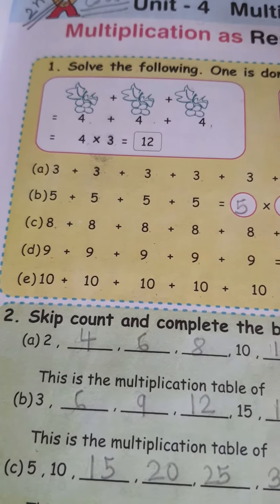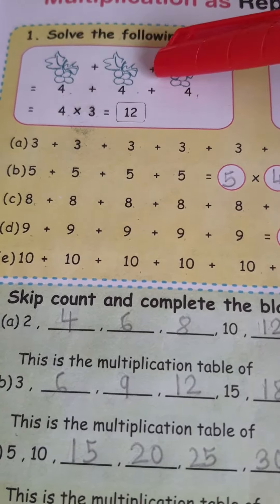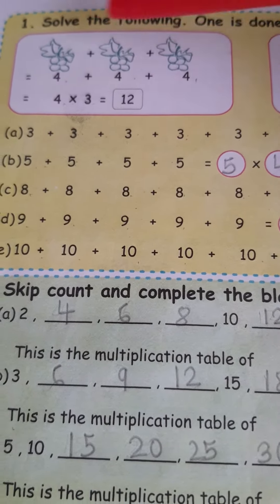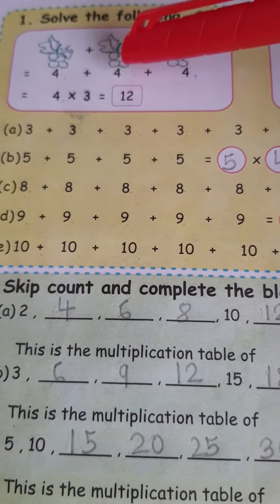First come to here. See, grapes are here. So, how many grapes? 1, 2, 3, 4. Right, written already 4. Again, 1, 2, 3, 4. Written already 4.